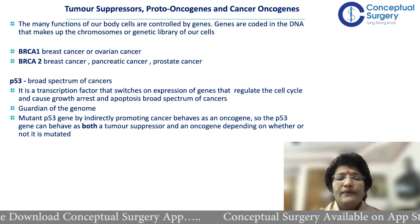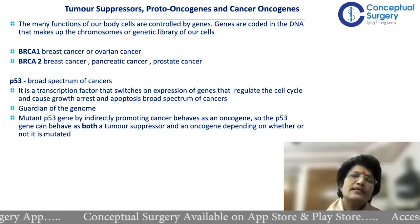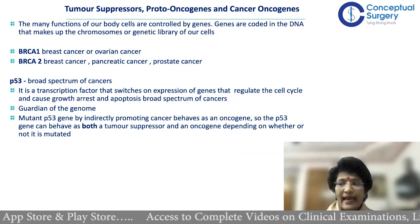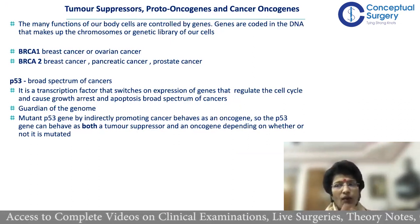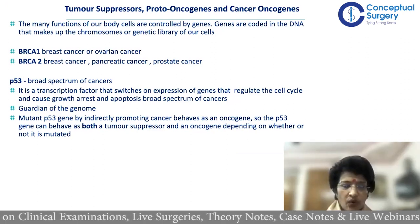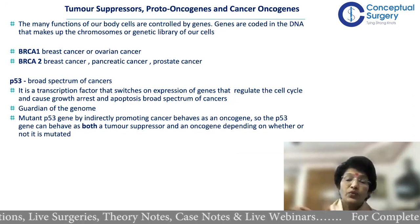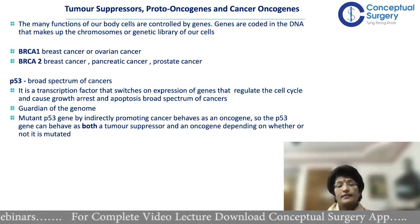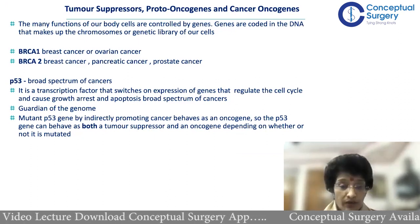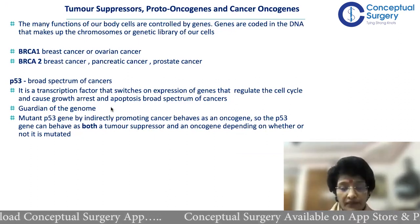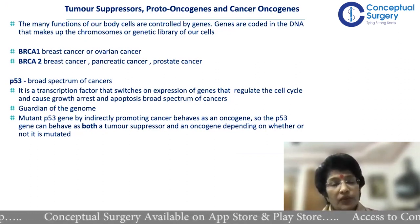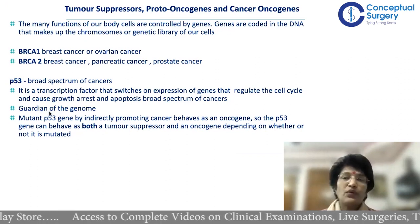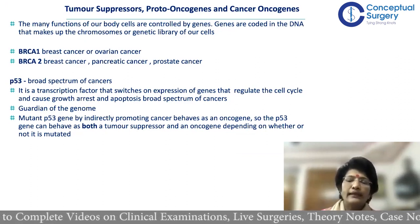As you grow in your knowledge of cancer, p53 is one gene you cannot leave out, as it is associated with a large spectrum of cancers. It is a transcription factor that switches on the expression of genes which regulate the cell cycle — either by arresting growth or by leading the cell to suicide, which in technical terms is apoptosis. p53 is also known as the guardian of the genome because it maintains the integrity of the coding happening within the genetic material.